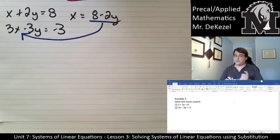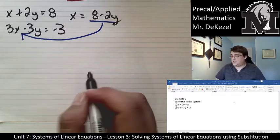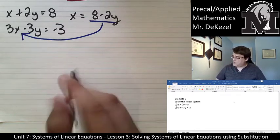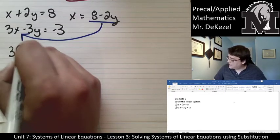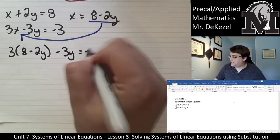And then take that portion and plug it into my other equation for x. It is important to plug it into the other equation and not the same equation. Otherwise, you will end up with an endless loop, 0 equals 0 and it just doesn't work. So we plug that in. 3 times (8 minus 2y) minus 3y equals negative 3.